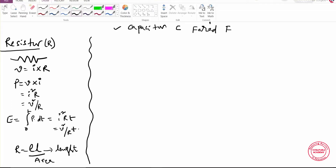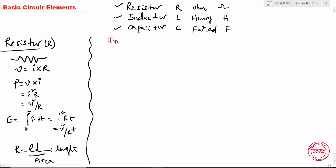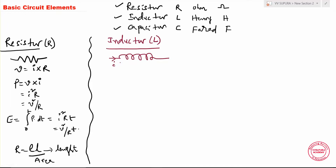The next element is the inductor, represented with L. The property of the inductor is that it opposes the sudden change of current. When any current is flowing through this element, the inductor will store energy in the form of a magnetic field — an electromagnetic field. The unit is henry.